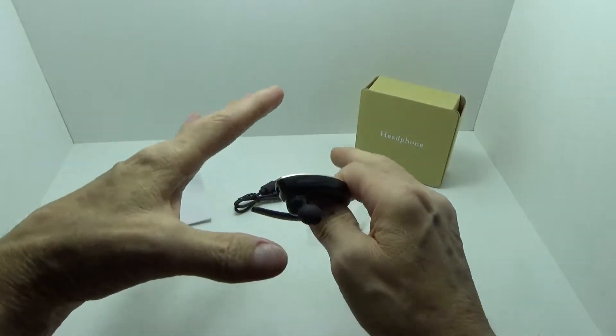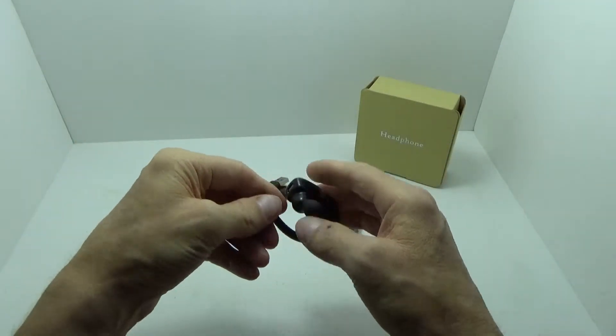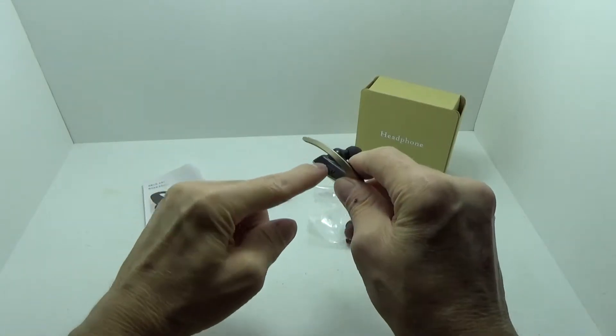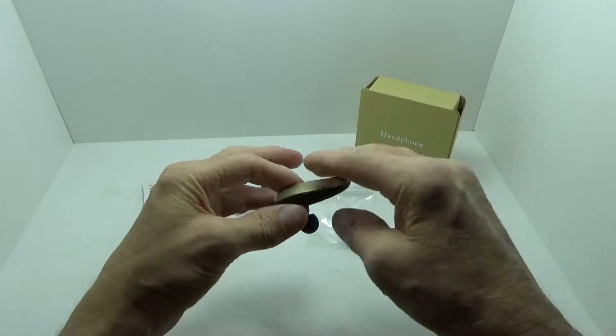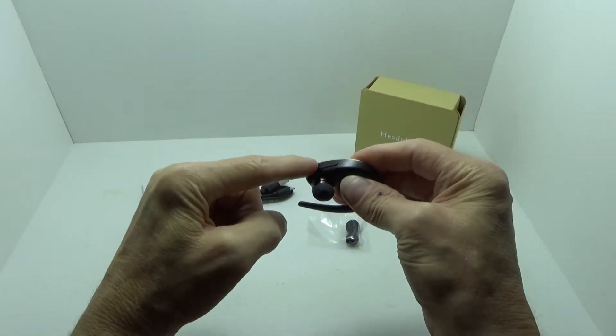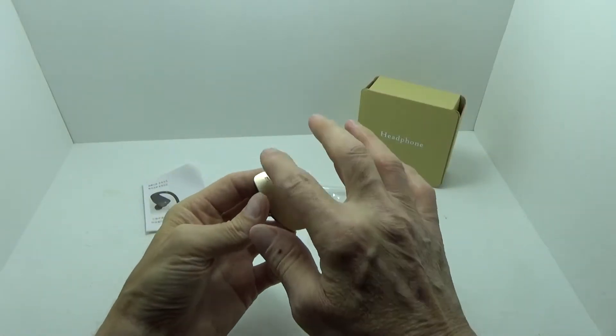I like that it has this little sort of sliding switch to turn it off and on, and of course it enters into pairing mode. You have your other controls on the bottom, and then you have your charging port.